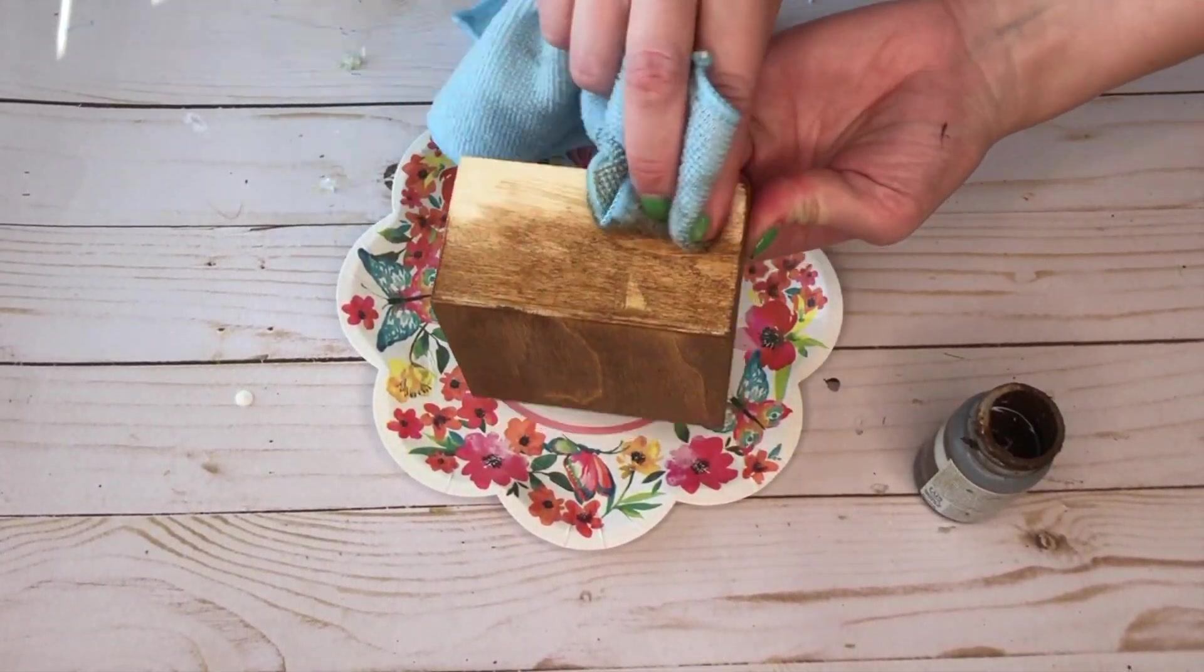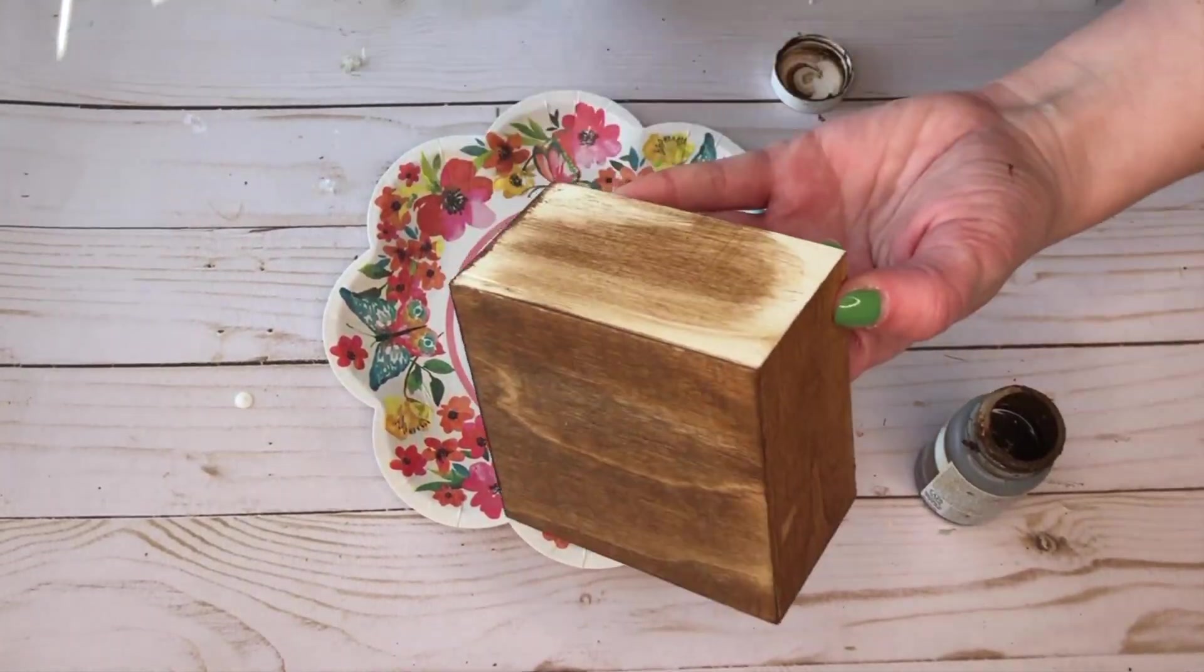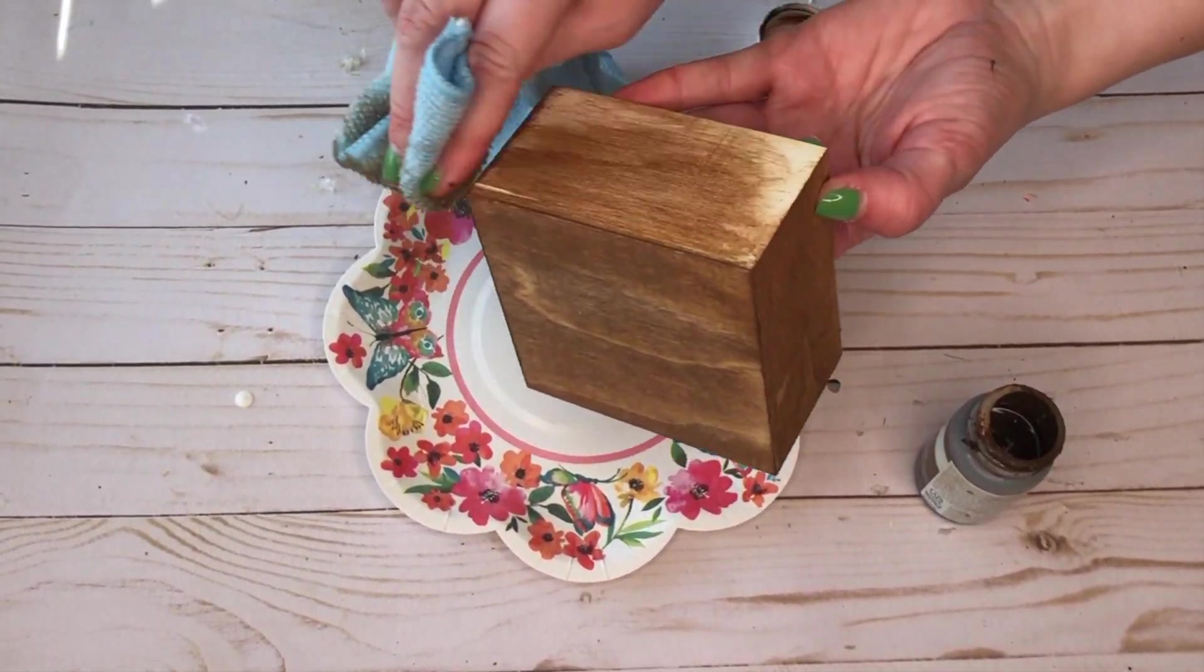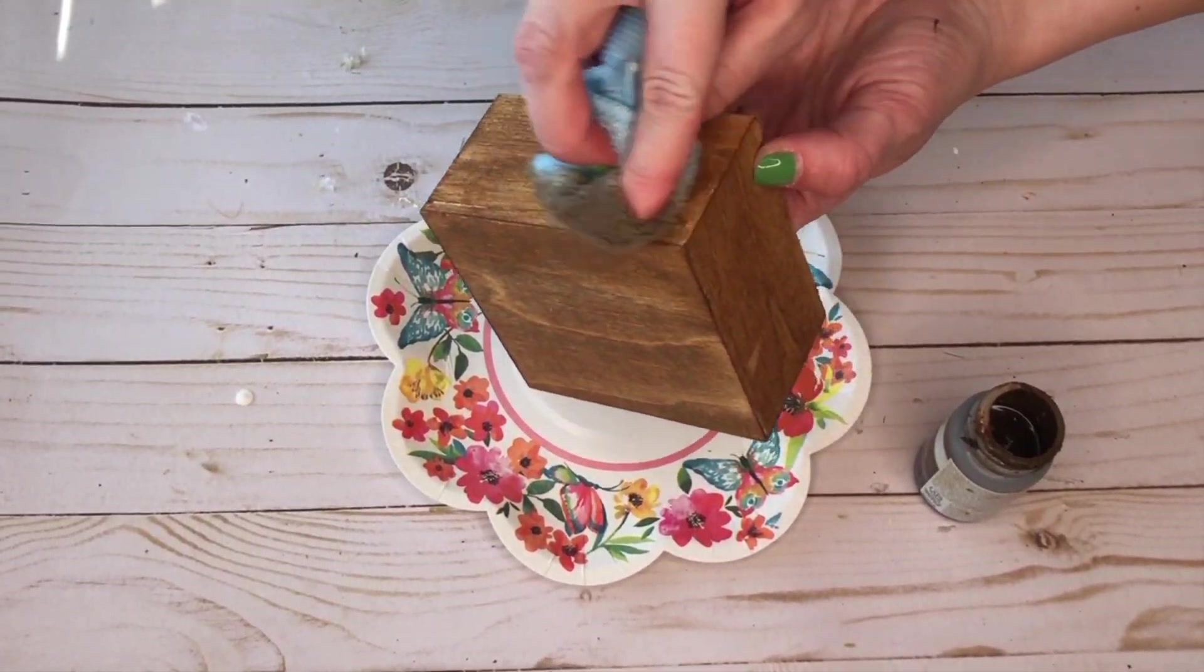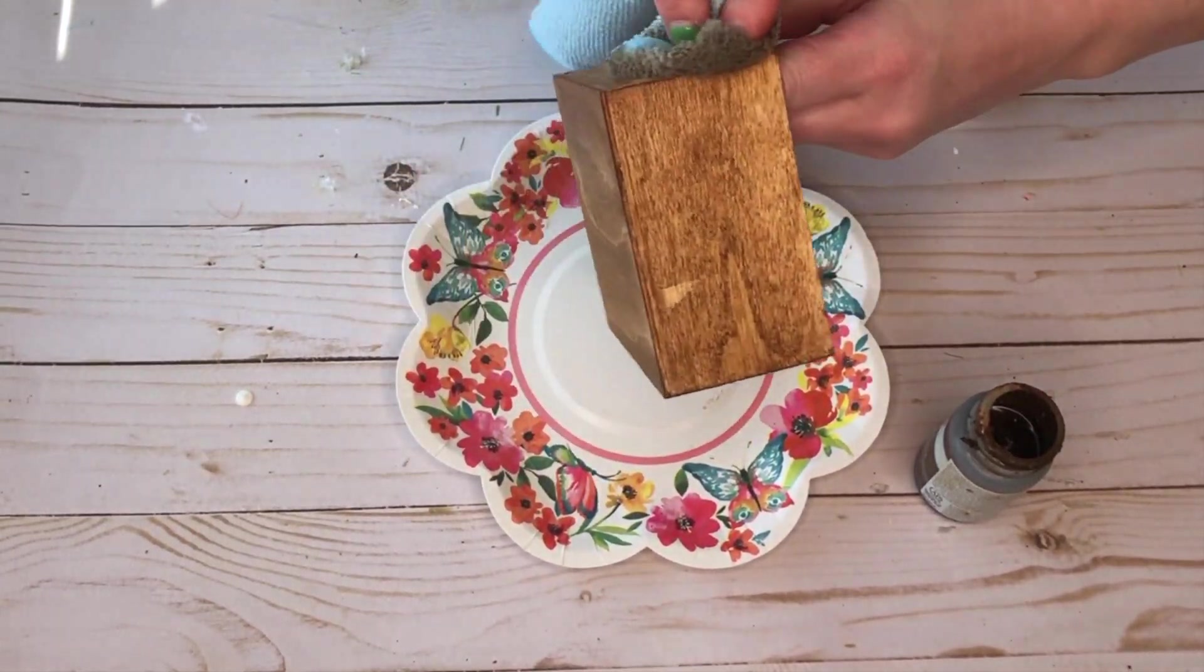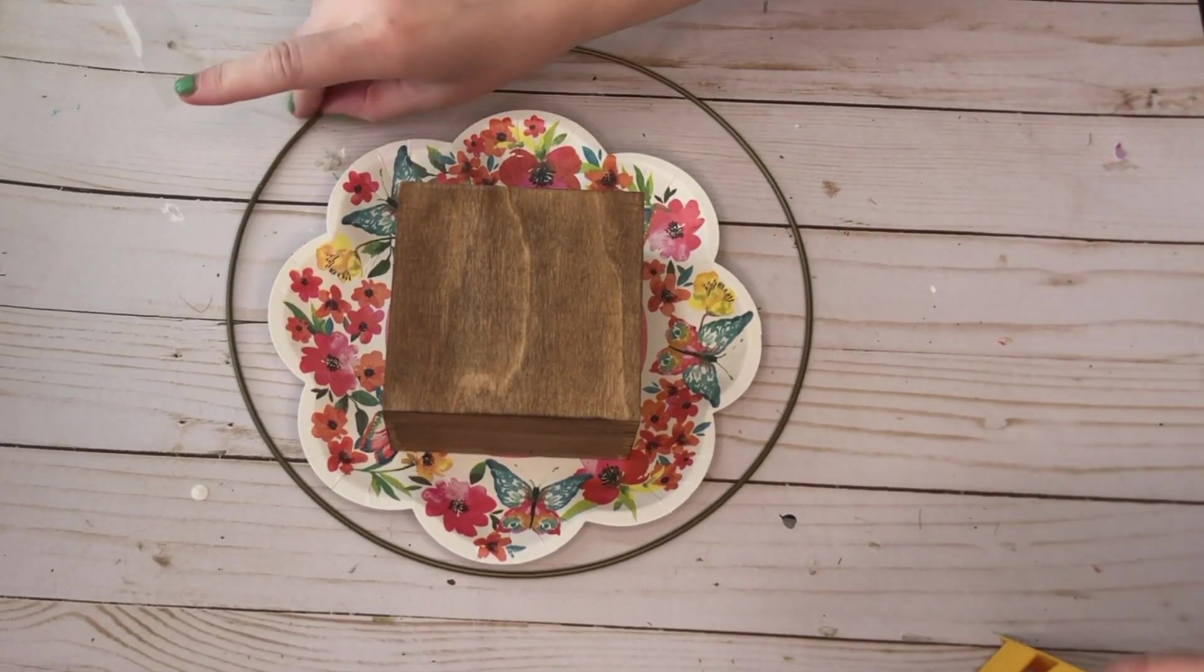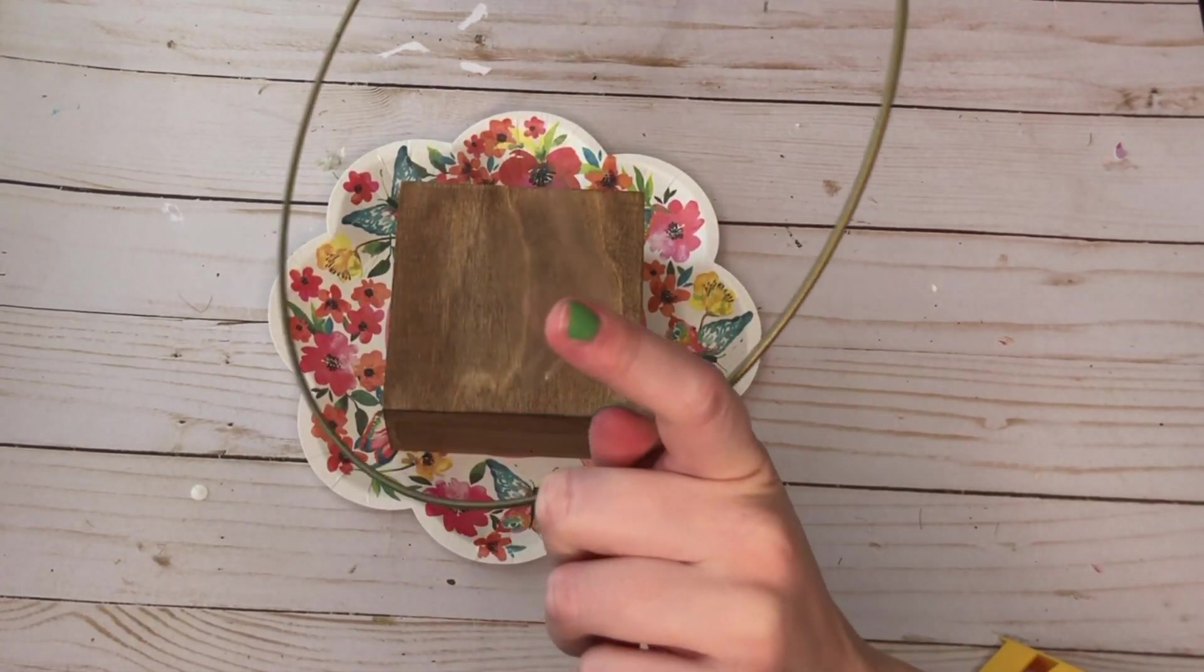And we're going to be flipping this box upside down so that it will be our stand for the floral hoop. And I took a damp towel and some of this Waverly stain that I have in the shade antique, and I'm just rubbing that into the box to give it a nice wood stain.